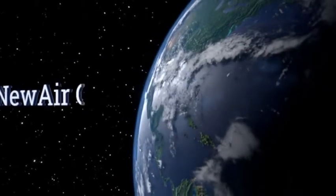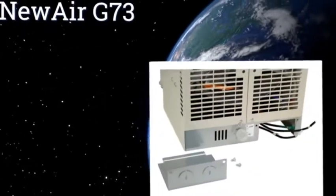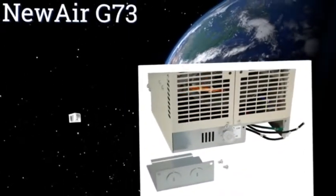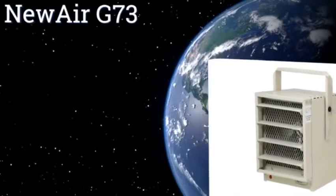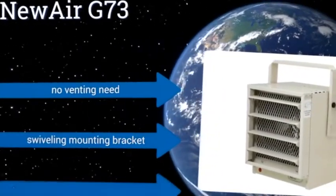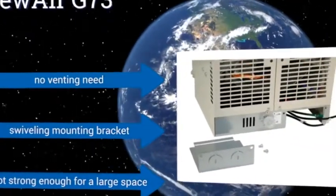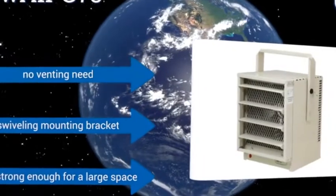At number 9, the Electric Newair G7 III boasts 5,000 watts of warming power and has an automatic shut-off feature that prevents overheating. Its durable construction can tolerate rugged and tough conditions, but it's a bit louder than other comparable units. No venting is needed and it includes a swiveling mounting bracket, but it's not strong enough for a large space.